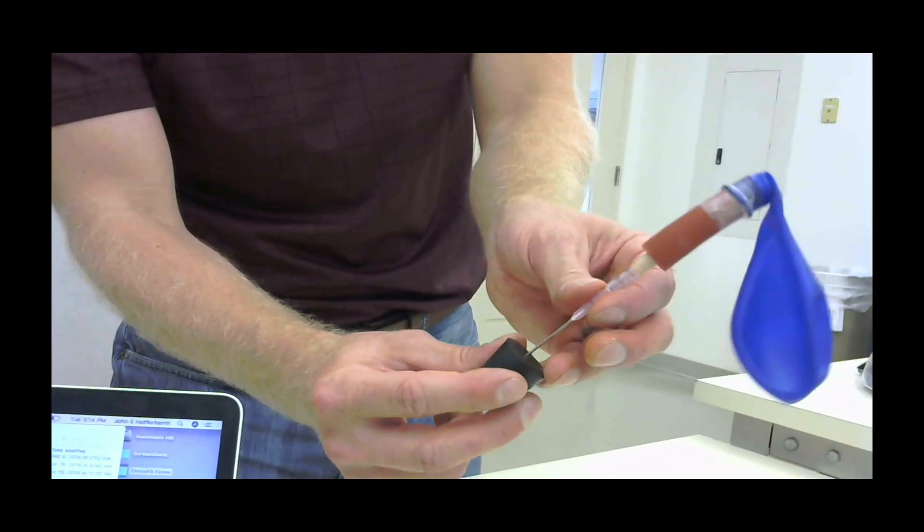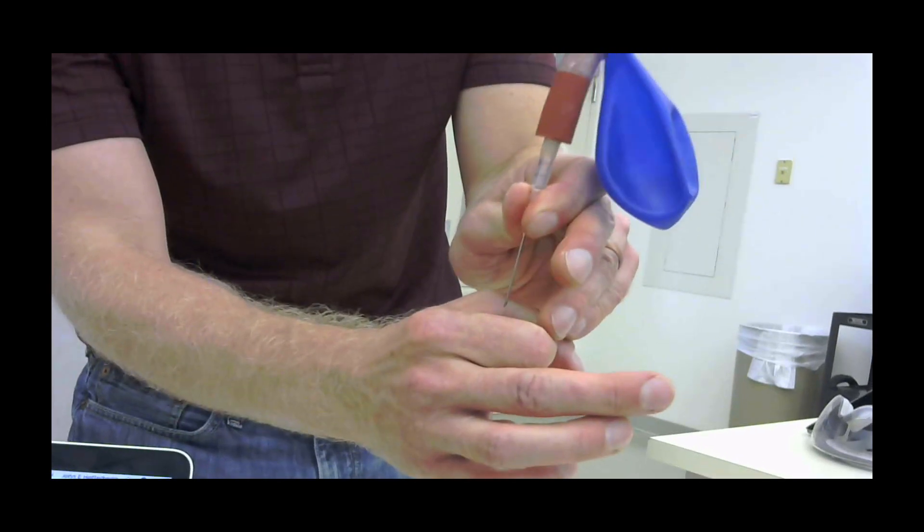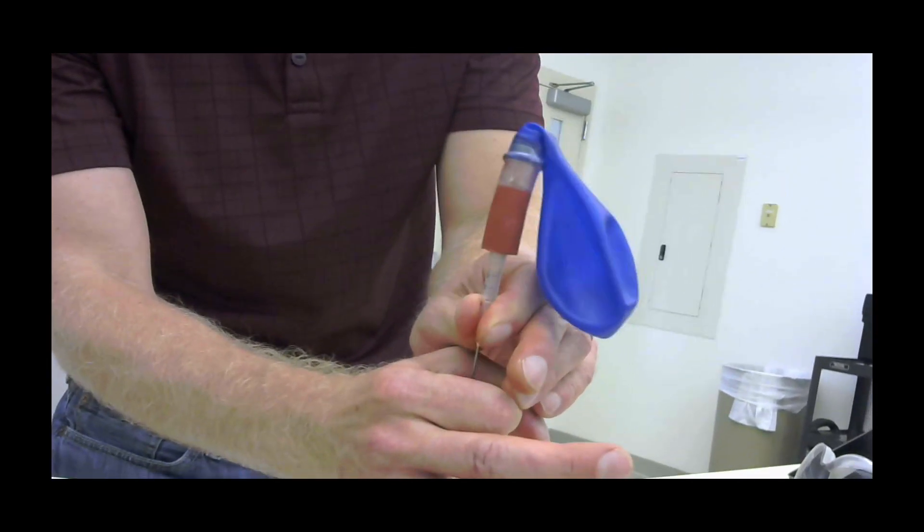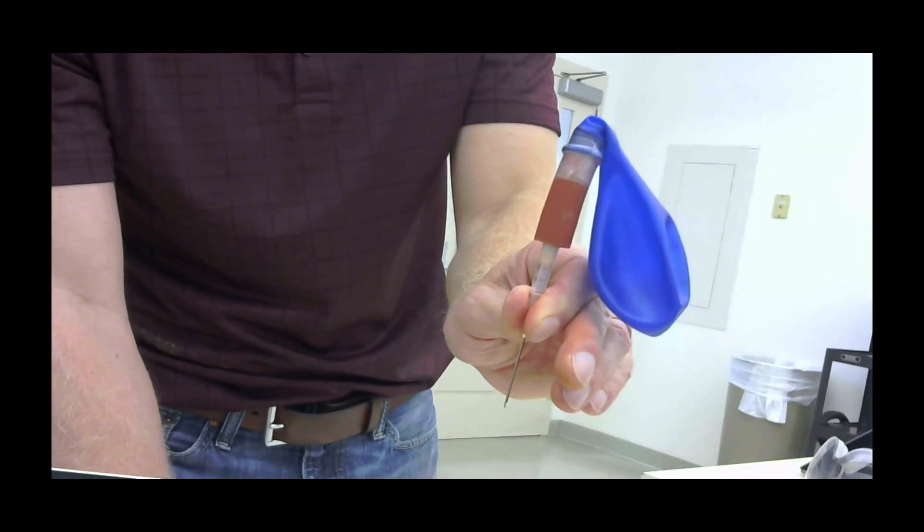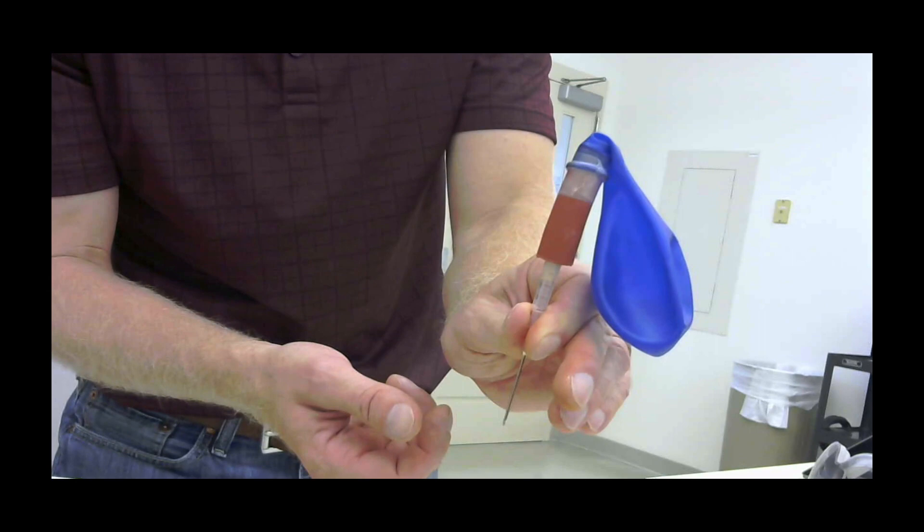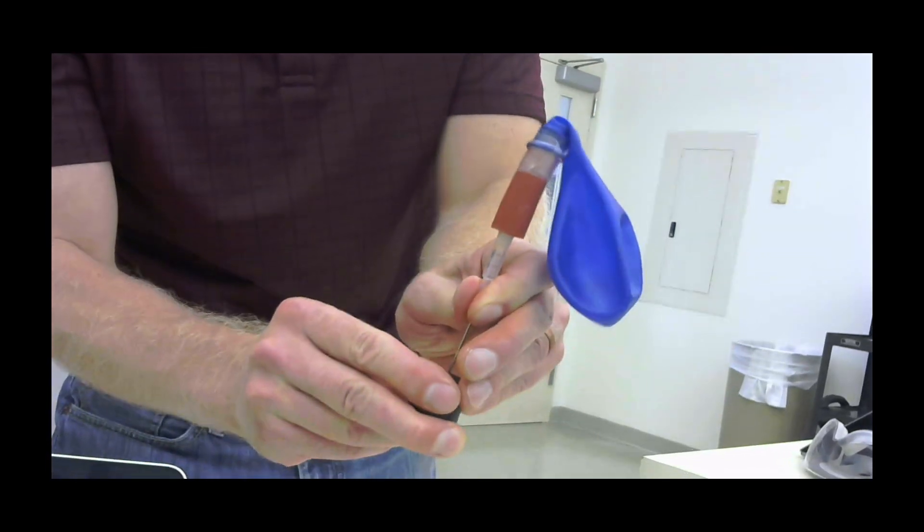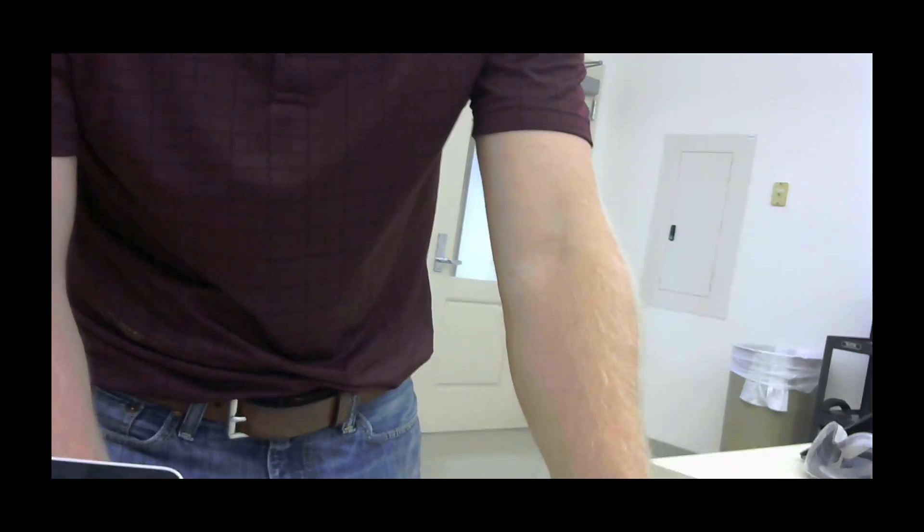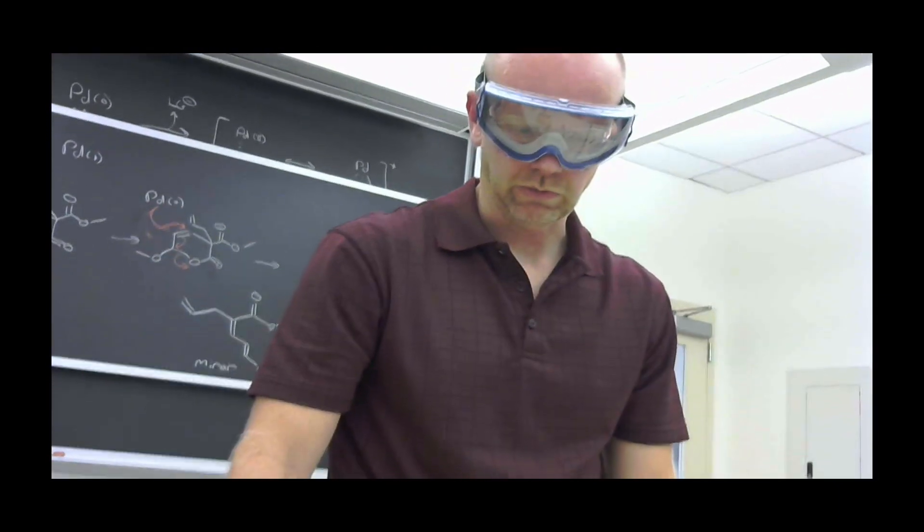Once you're ready to put that into the reaction, you would take the needle out and you would put this needle through the center of the septum where the rubber is thinner and then that will provide a positive pressure of nitrogen to your reaction. If the balloon deflates, obviously there's a leak in the system and then you would have to refill the balloon and try to seal the reaction flask better. So that's how you make a nitrogen balloon for using dry conditions for a reaction.